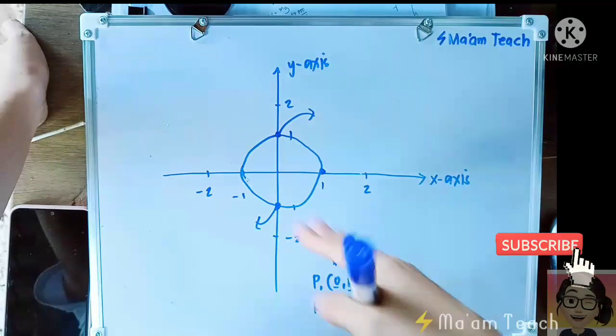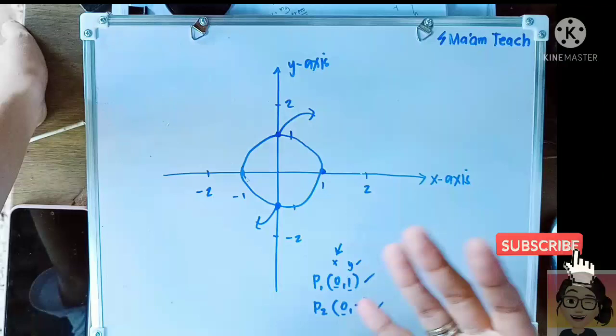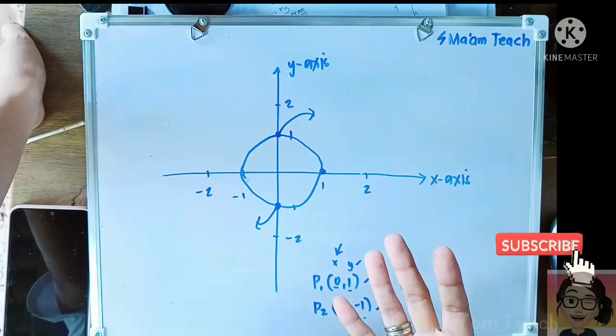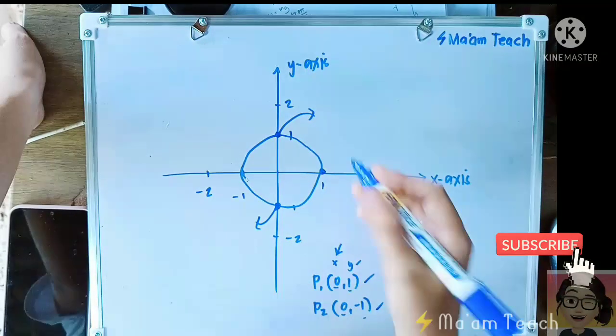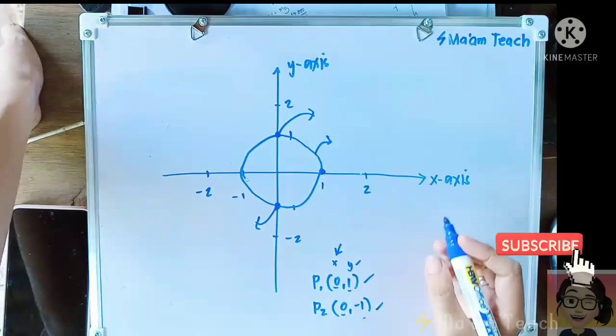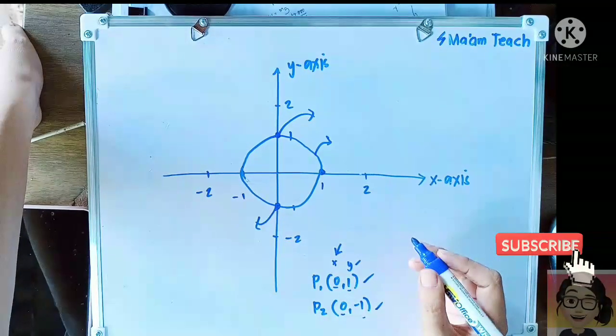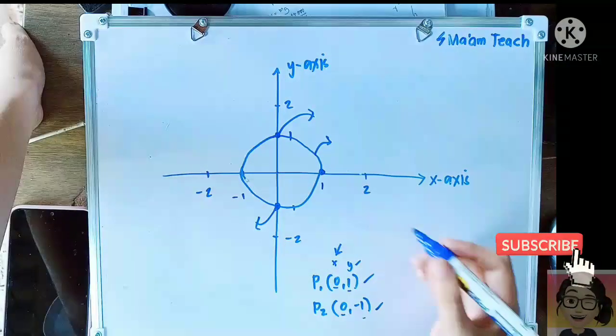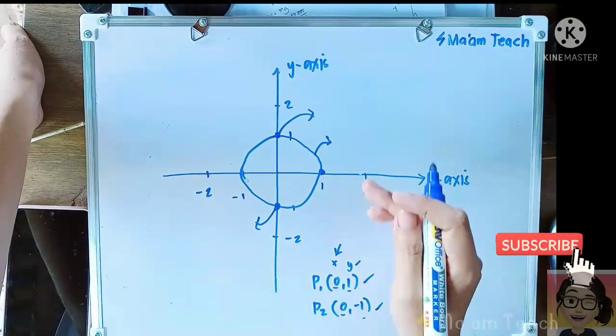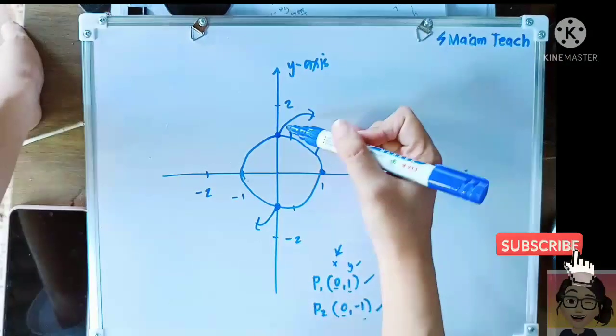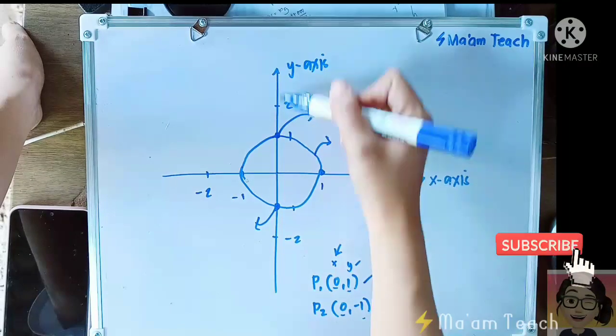This is an example of a graph that cannot be considered as a function. So again, a circle, since it intersects the vertical line at exactly one point here, this is the vertical axis, which is the y-axis.